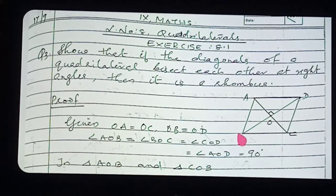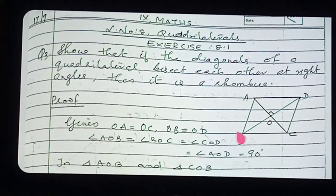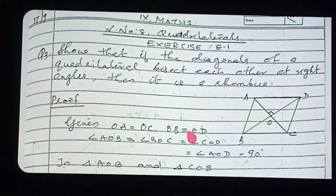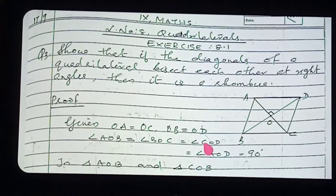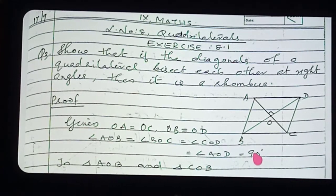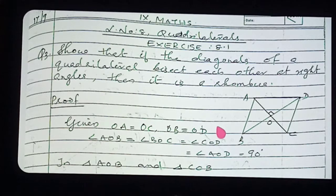The given conditions are: OA equal to OC, OB equal to OD, and all angles AOB, BOC, COD, AOD are 90 degrees. Now what is your aim? We have to prove that all sides are equal — it is a rhombus.